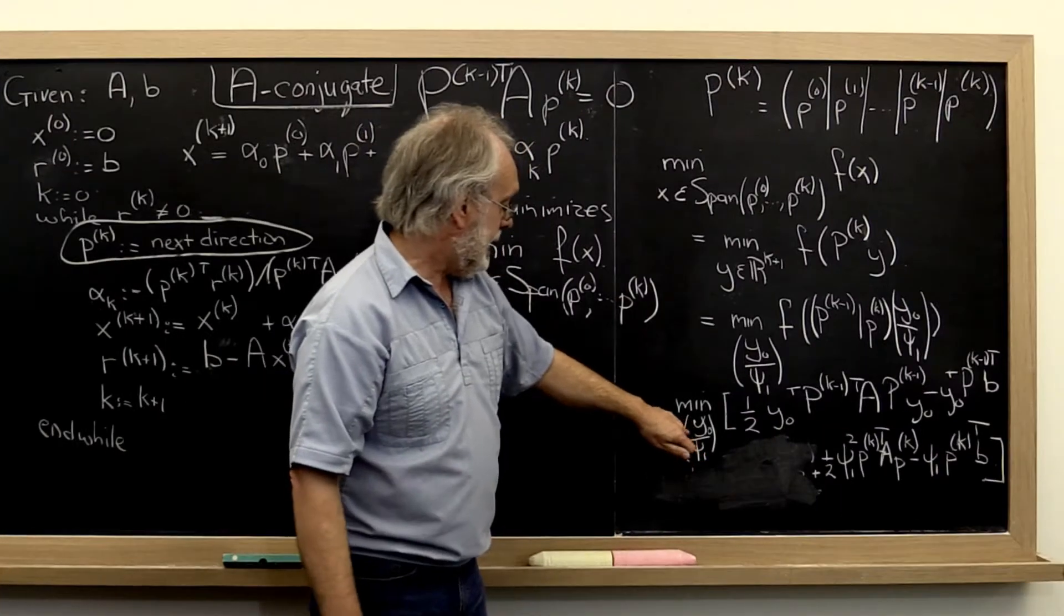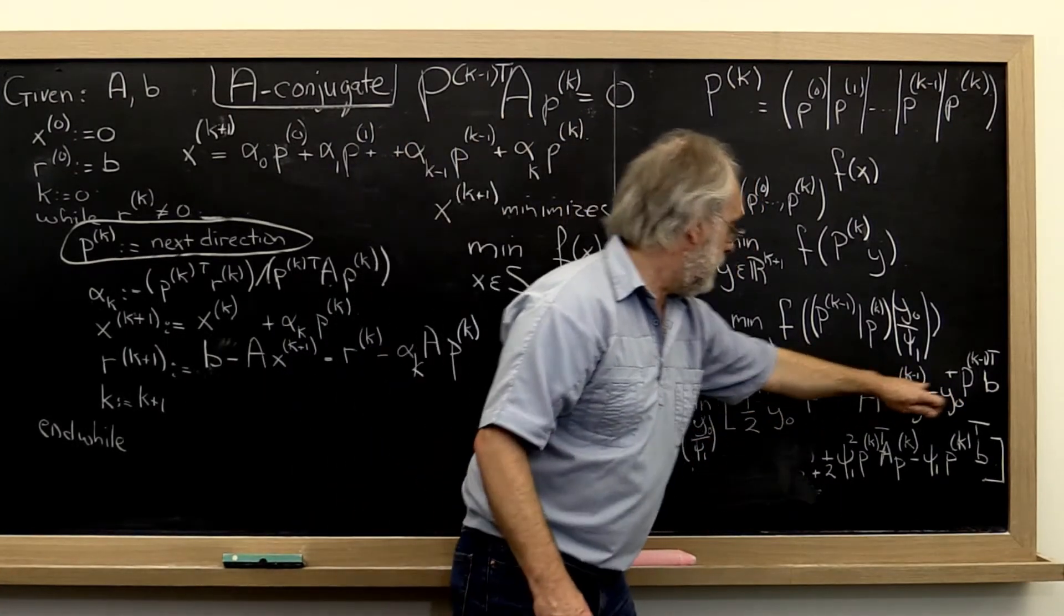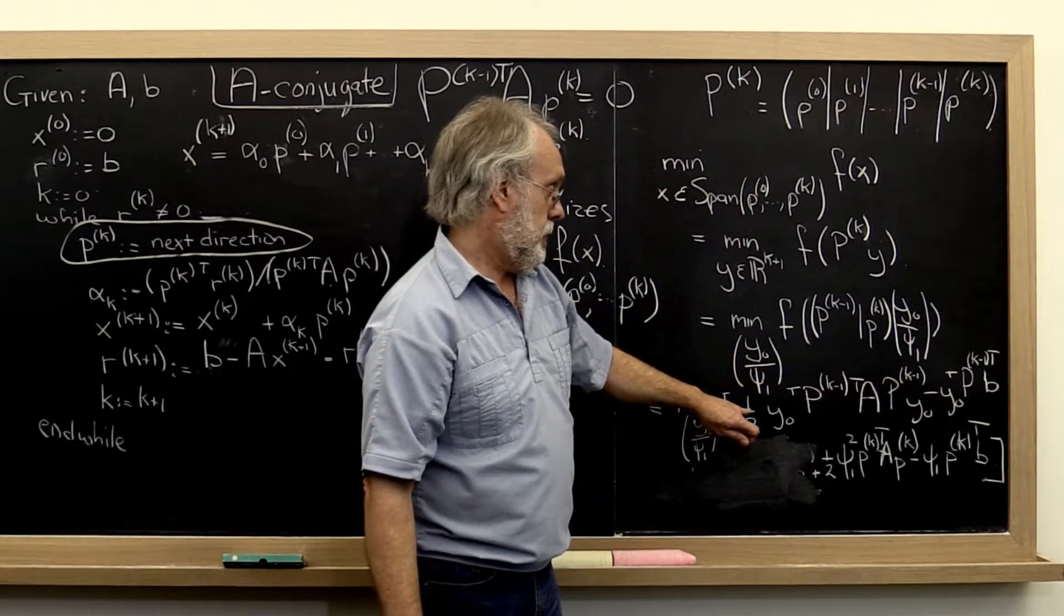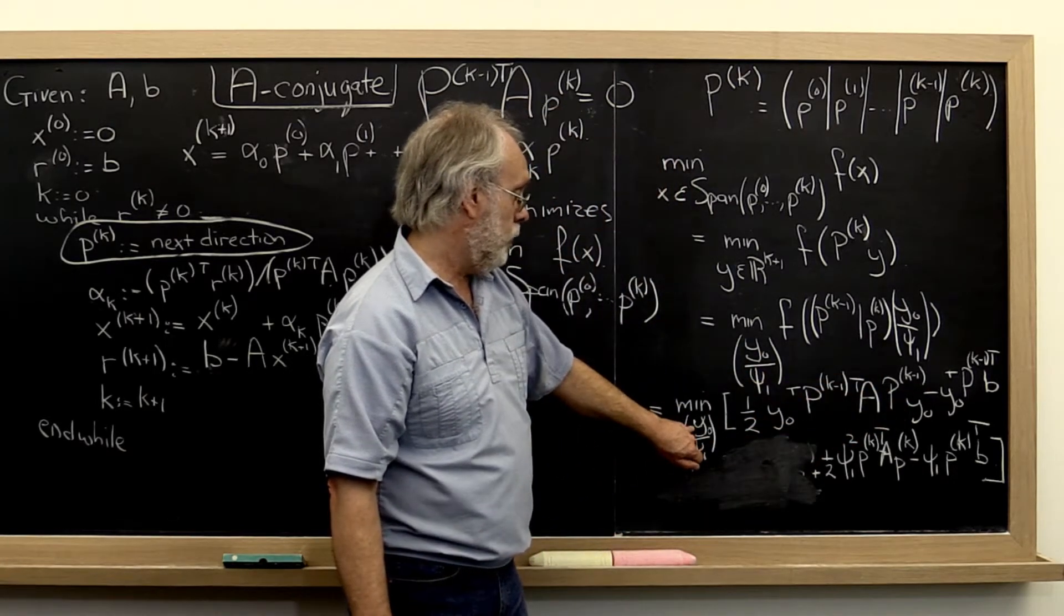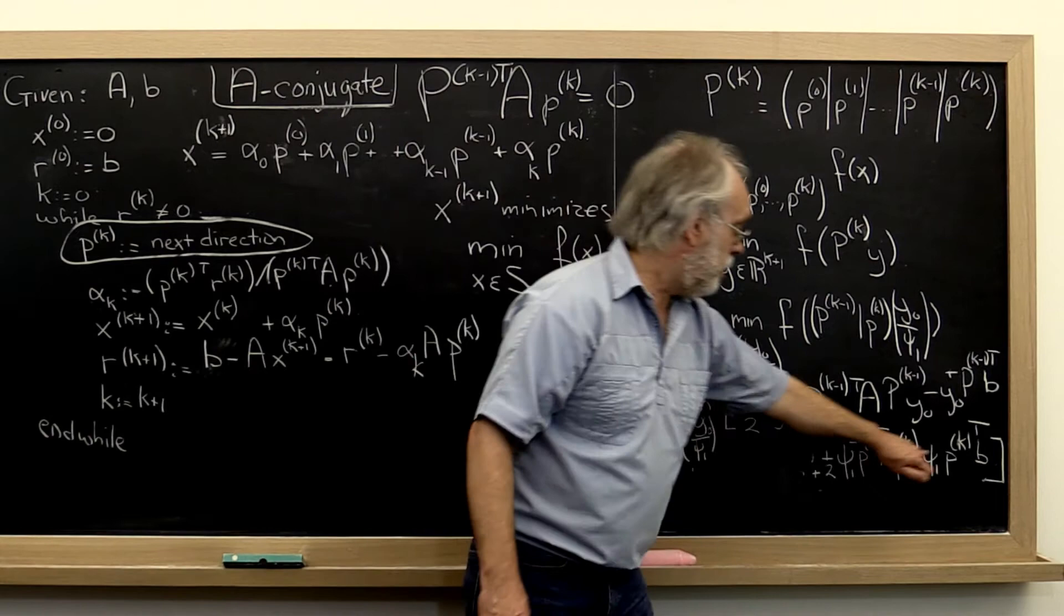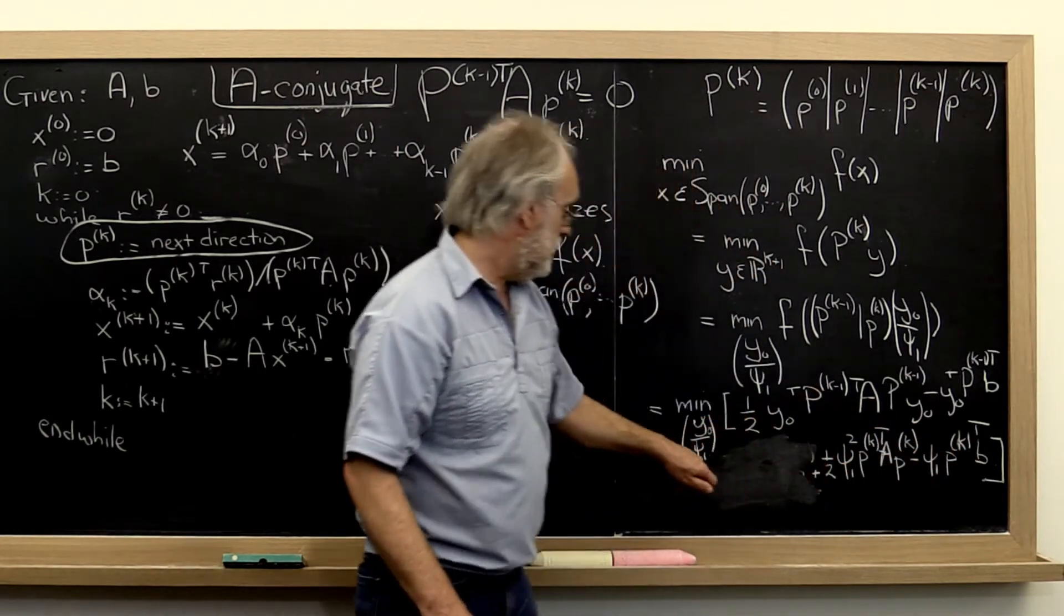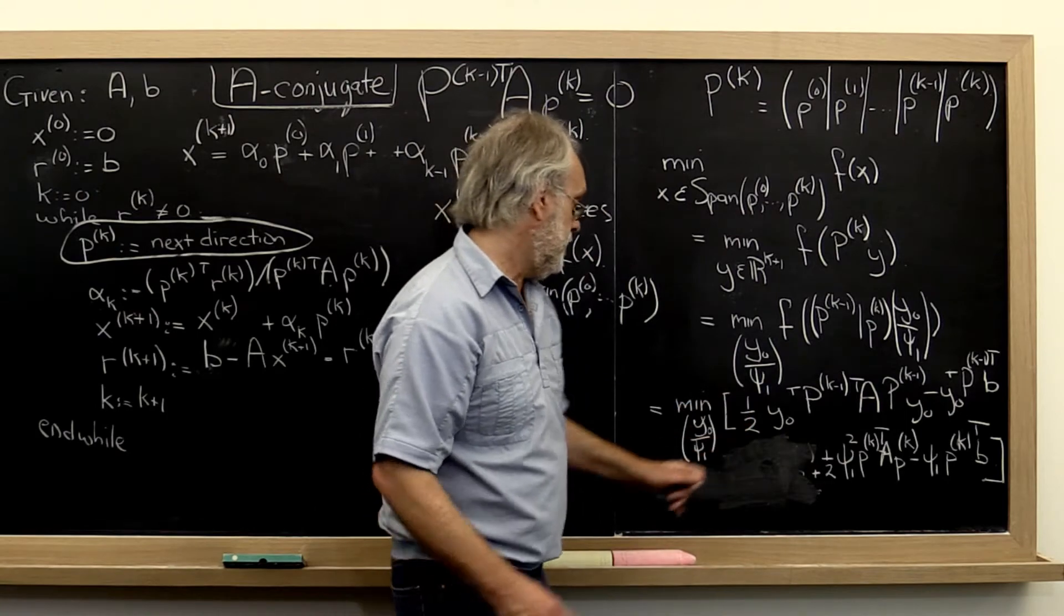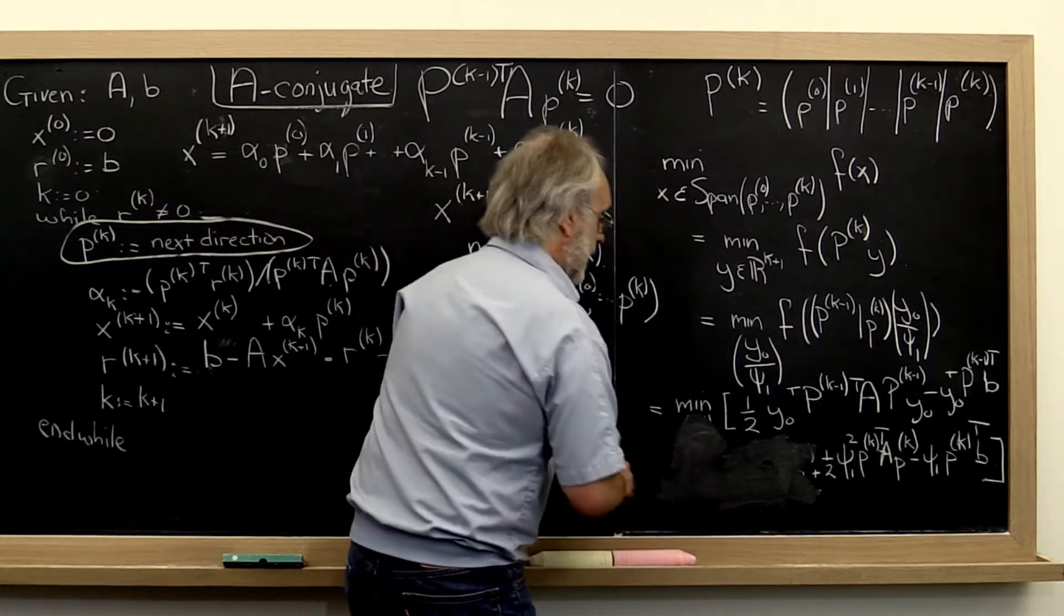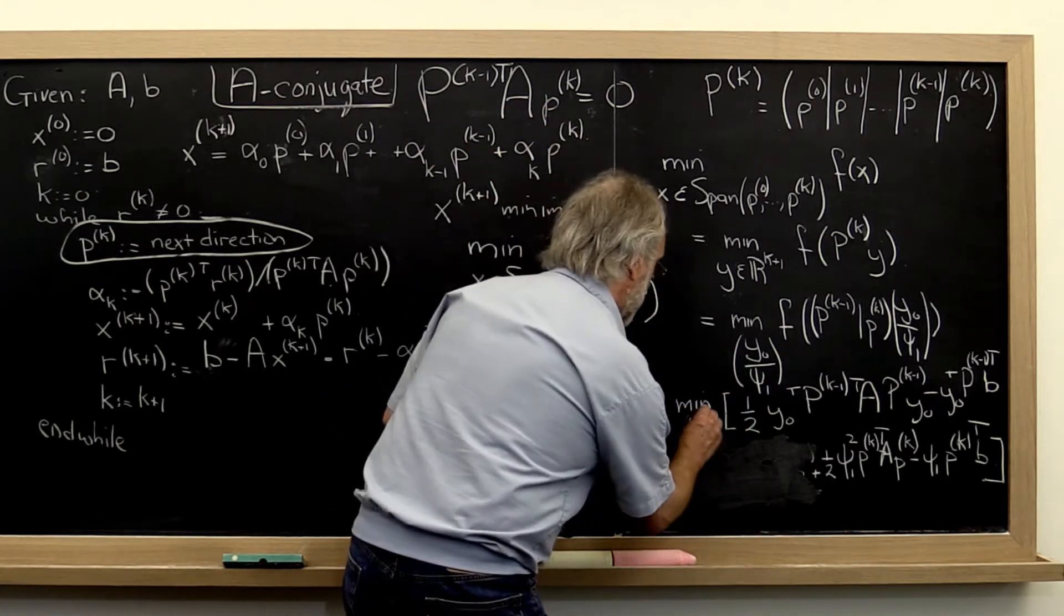What now happens is that this part of what we have here is only dependent on y0. This part is only dependent on psi 1, and therefore minimizing the entire expression is the same as minimizing the first part over y0.